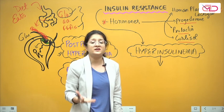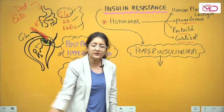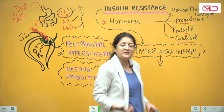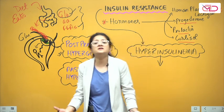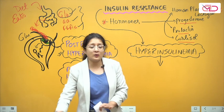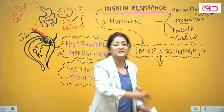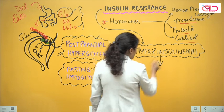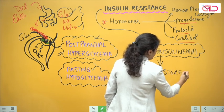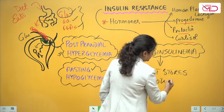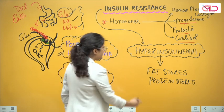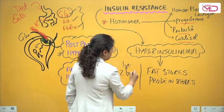This excess insulin is important. In the first two trimesters of pregnancy, it drives storage. Maternal weight gain is happening — a lot of it is water retention, but a significant amount is also the mother laying down protein stores and fat stores. These fat and protein stores are laid down in the first two trimesters.